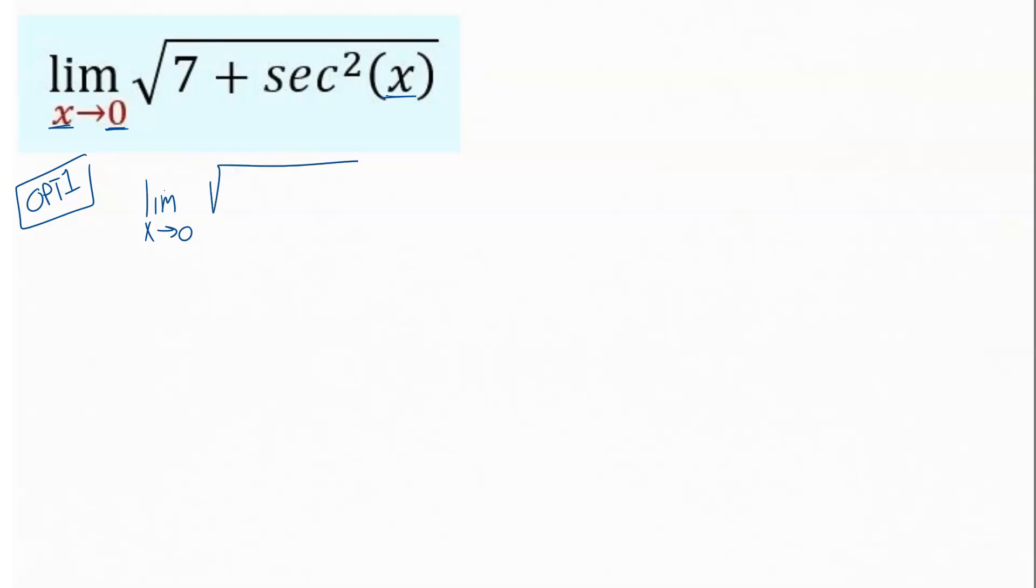We're taking our limit as x approaches zero of seven plus the secant squared of x. When we go to plug in our value, we're allowed to drop that limit statement. Once we go to plug in a value, secant squared, we're plugging in zero now for x.